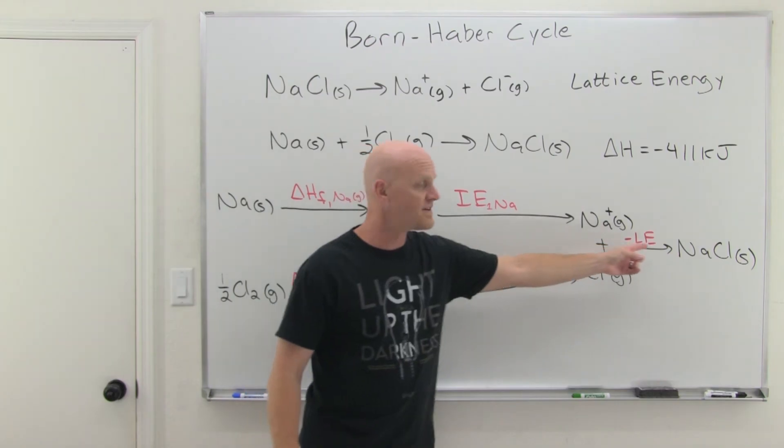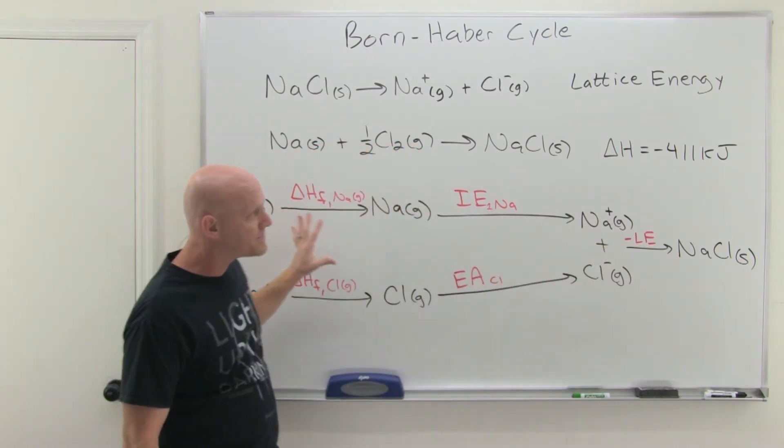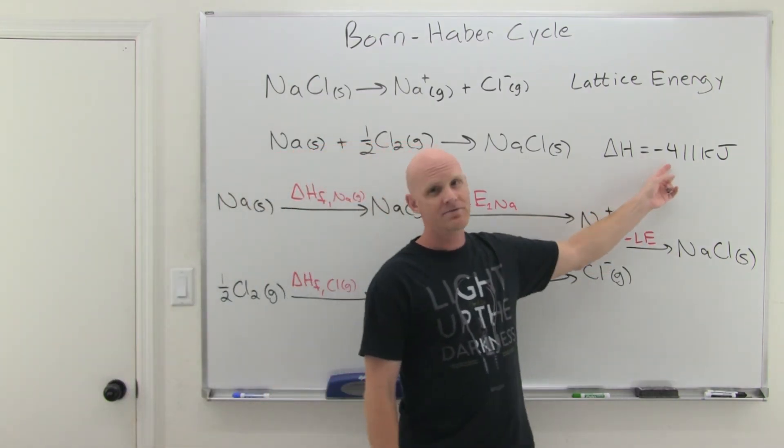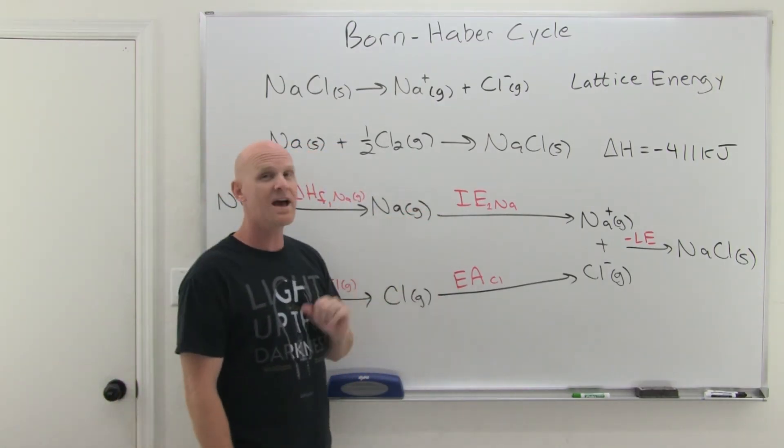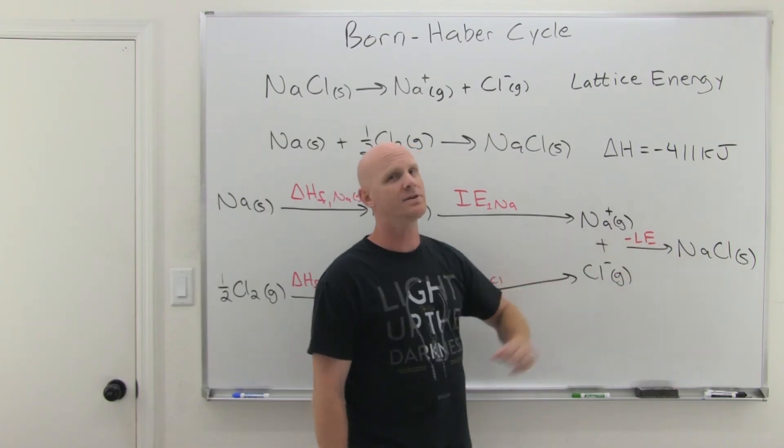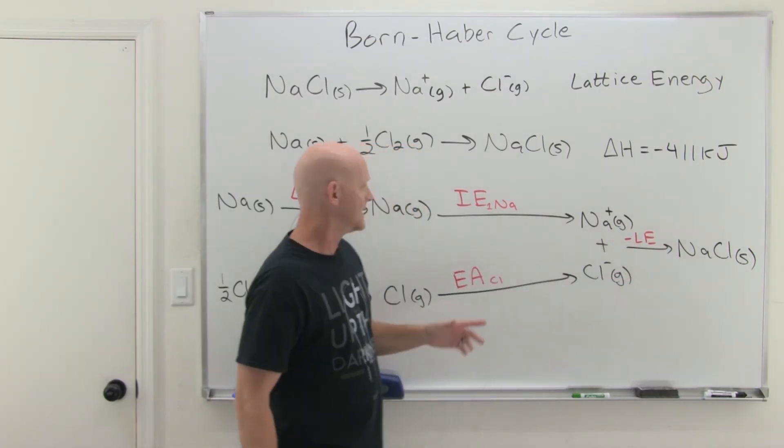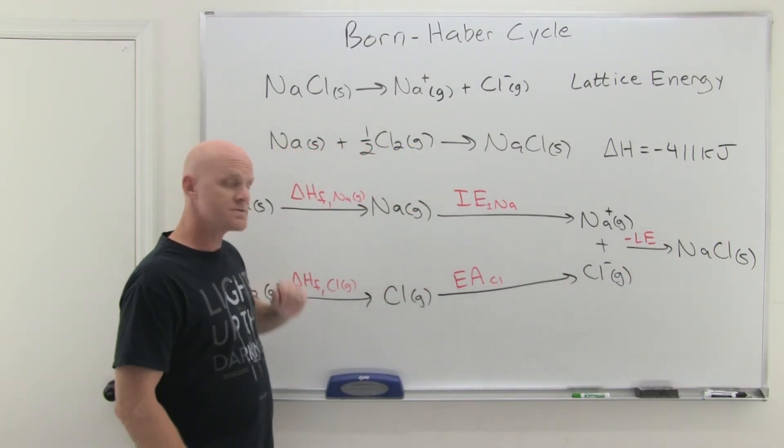And so now we've really broken this up into five steps. One, two, three, four, five. And all five of those steps are going to add up to negative 411 kilojoules. And the key is we can find all four of these in tables and then we can mathematically determine this guy right here. So let me go get these values out of some tables.